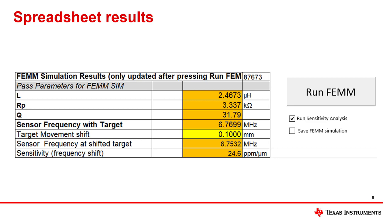If FEM is not installed on the computer, the spreadsheet will prompt you to install FEM from the FEM homepage. The results obtained from the FEM simulation differ from those of the calculation in the spreadsheet because it uses the trace properties and the magnetic coupling between the sensor and the target to determine the outputs.